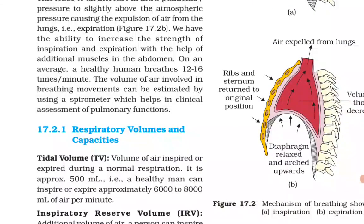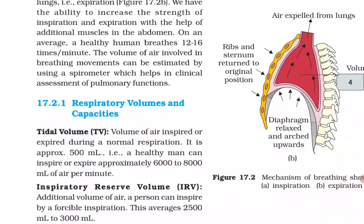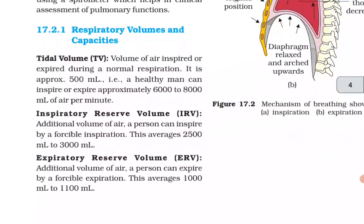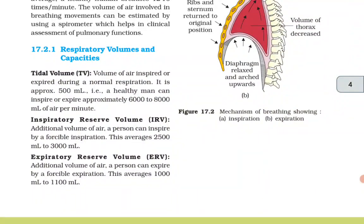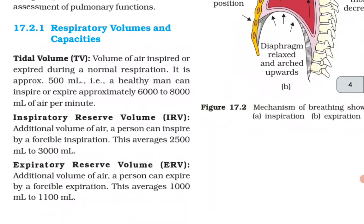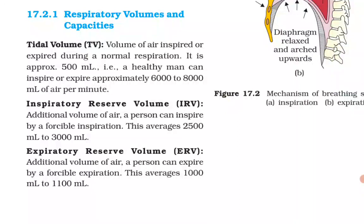We have the ability to increase the strength of inspiration and expiration with the help of additional muscles in the abdomen. On an average, a healthy human breathes 12 to 16 times per minute. The volume of air involved in breathing movements can be estimated by using a spirometer, which helps in the clinical assessment of pulmonary functions. 17.2.1 Respiratory Volumes and Capacities. Tidal volume is the volume of air inspired or expired during a normal respiration — approximately 500 ml.